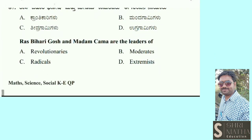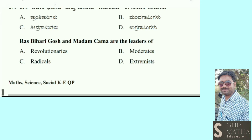Next question: Ras Bihari Ghosh and Madam Kama are the leaders of — radicals, revolutionaries, moderates, or extremists? The answer is revolutionaries. The leaders of moderates include Gopalakrishna Gokhale and Dadabhai Naoroji. The extremist leaders include Bal Gangadhar Tilak, Bipin Chandra Pal, and Lala Lajpat Rai.